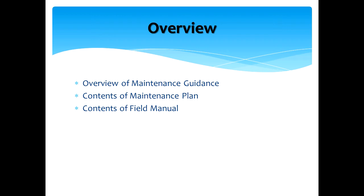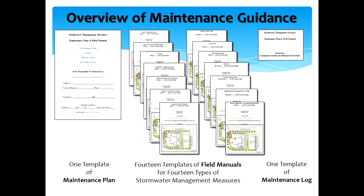By the end of this video, you will understand how these maintenance guidance materials work together in complying with the maintenance requirements for stormwater BMPs. The maintenance guidance documents are located on the department's stormwater website at njstormwater.org. Regulations, including the New Jersey Pollutant Discharge Elimination System Rules at NJAC 7.14a and the Stormwater Management Rules at NJAC 7.8-5.a, contain maintenance requirements for stormwater BMPs.